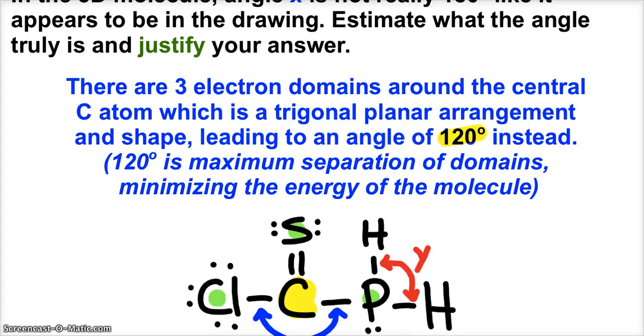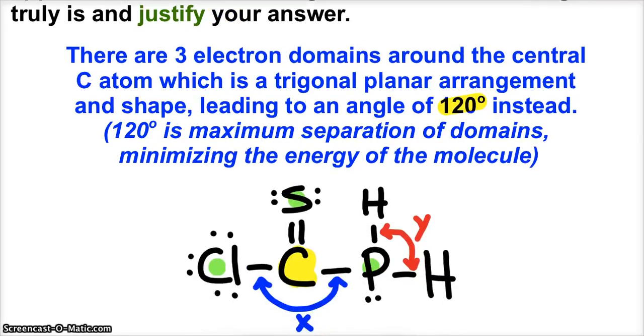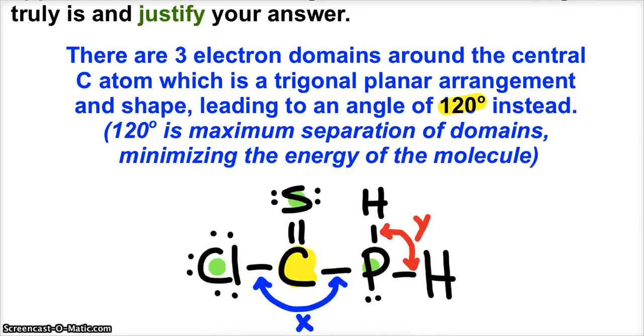Okay. And that should be enough. It's asking you to show that it's not really 180 degrees. So you say, 3 electron domains around the central atom, it's a trigonal planar arrangement and shape, which leads to an angle of 120 degrees instead. You could go further, but really the truth is, what's going on, 120 degrees is the maximum separation of those domains. It minimizes the energy of the molecule. That's all icing on the cake.